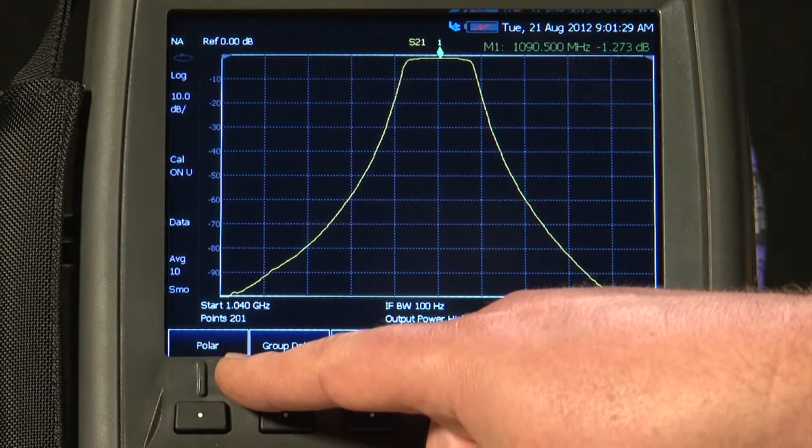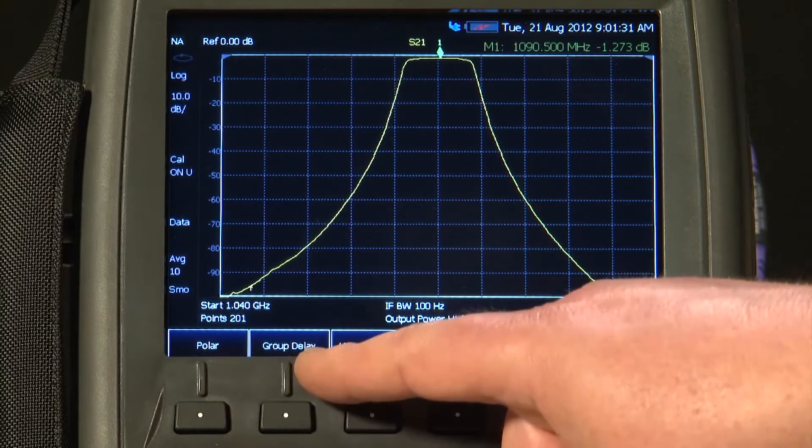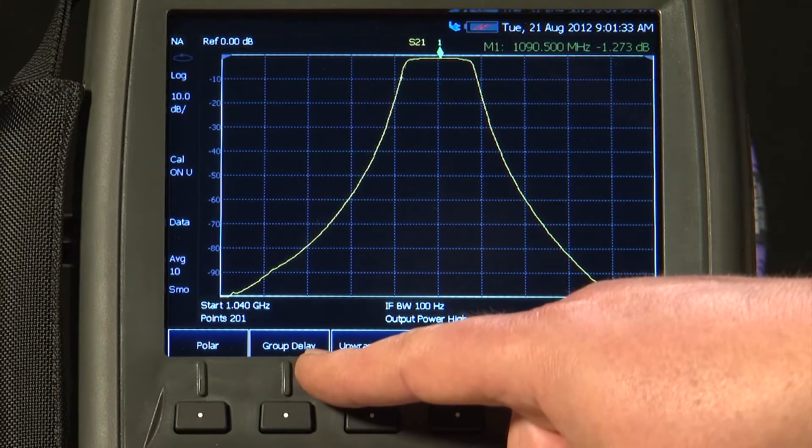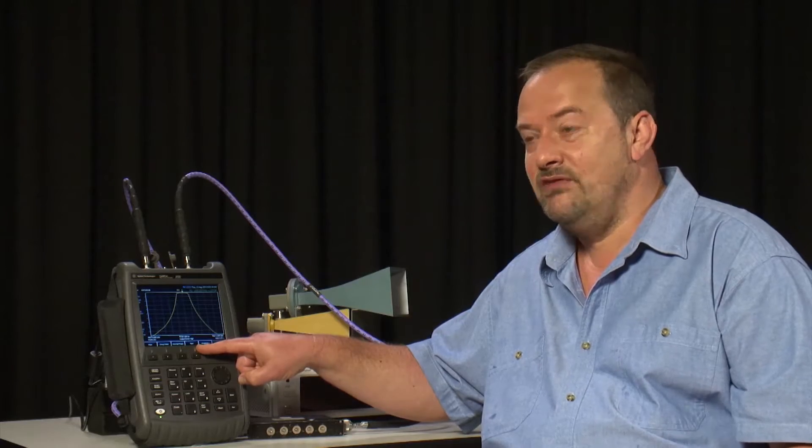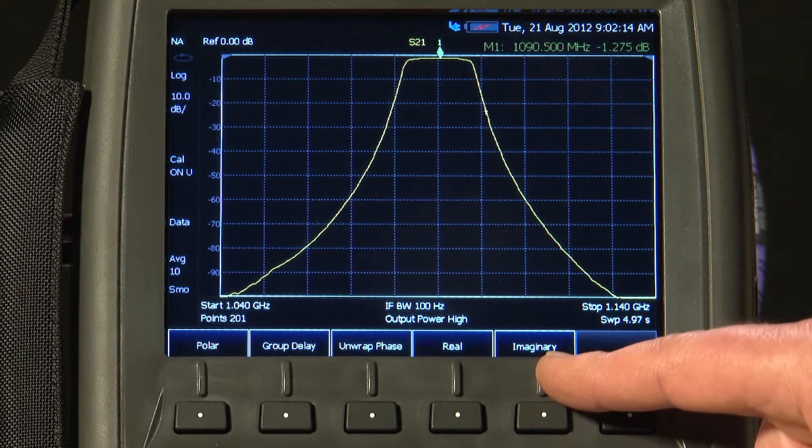And if I press More, we could look at a polar diagram, measure the group delay through the filter, the unwrapped phase, or just look at the real and imaginary parts of the filter's insertion loss.